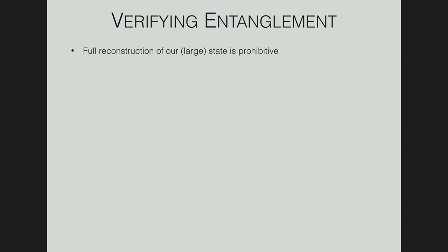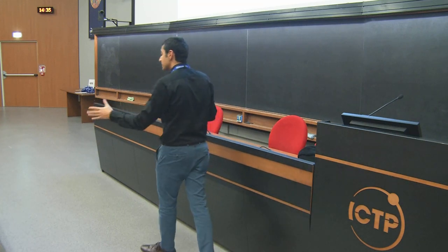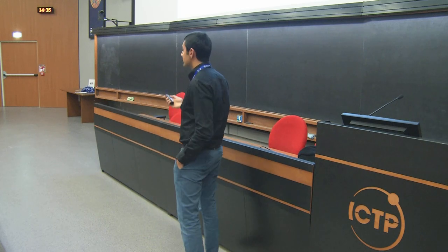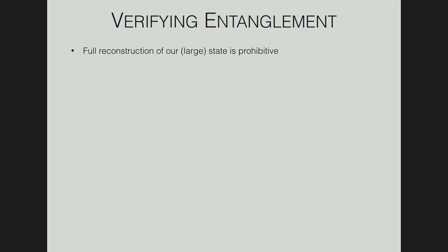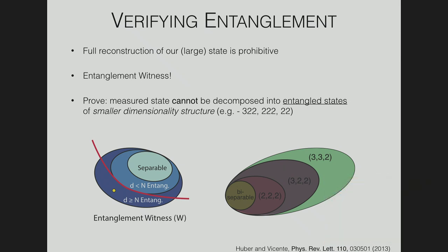Now that we have coherence, it doesn't yet prove that our state is entangled in three-three-two dimensions — it just says we have some coherence in some subspace. To verify entanglement, we could reconstruct the whole state, but this would take ages given our low count rate. We need an entanglement witness that can prove the state cannot be decomposed into entangled states of smaller dimensionality — ruling out that our correlations came from three-two-two, two-two-two, or bi-separable states.